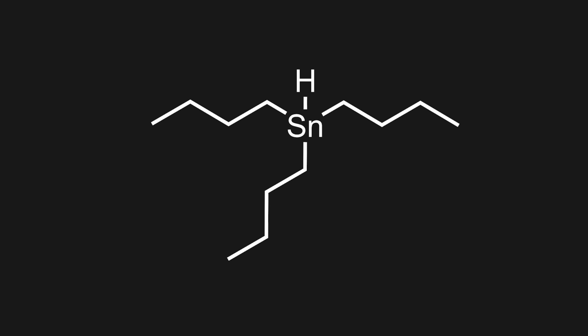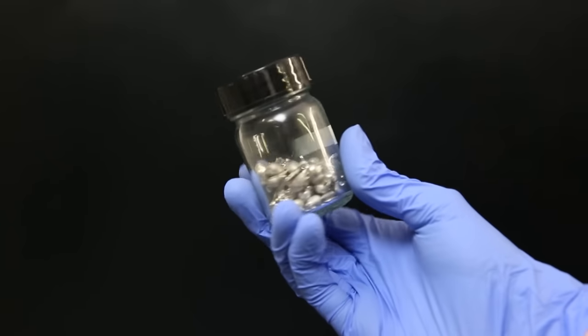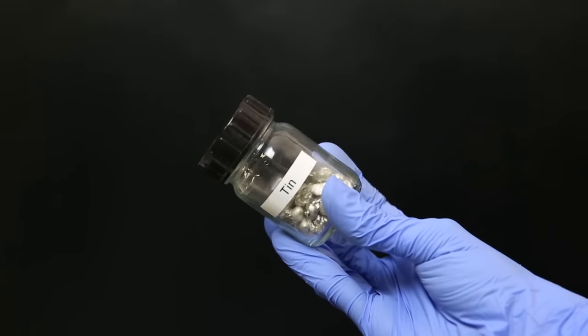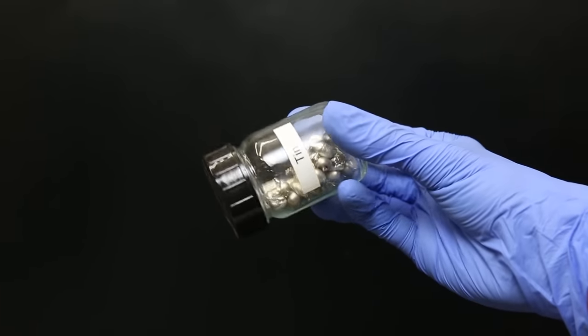Since I also want to explore some organotin chemistry, I will just be making it myself instead of buying it. Let's just get started and see how it goes. The tin I will be using are pieces that I made by melting a bar of tin and dripping it into a bucket of water.